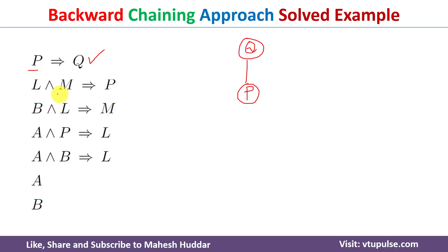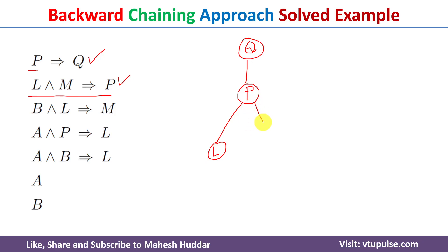This is the only rule where P is present on the conclusion side. So we try to prove all its premises true. There are two premises: L and M. We need to prove both of these premises true. If they are true, P will become true; if P is true, Q itself becomes true. Right now L and M are not true.